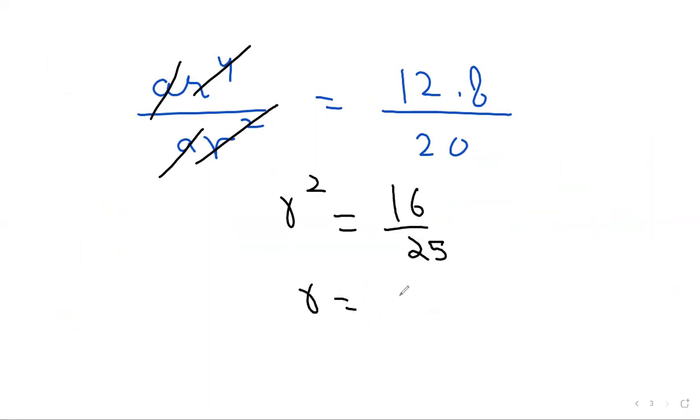And then, plus or minus 4 upon 5 when you apply the square root on it. Always keep in mind whenever we apply the square root, we always write down plus and minus.